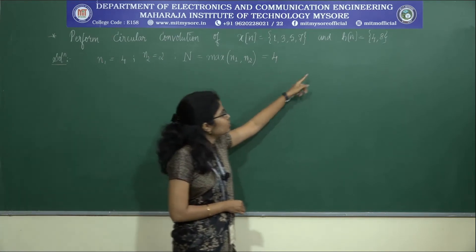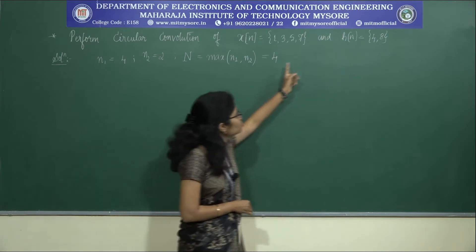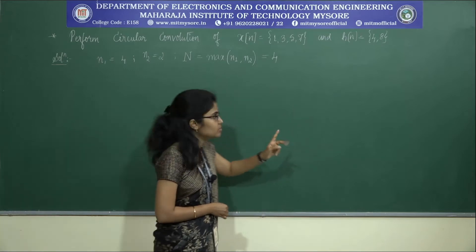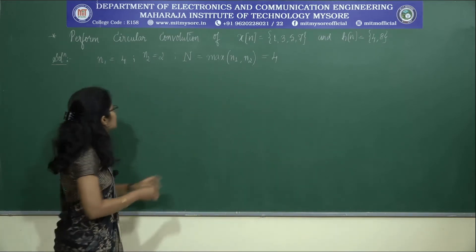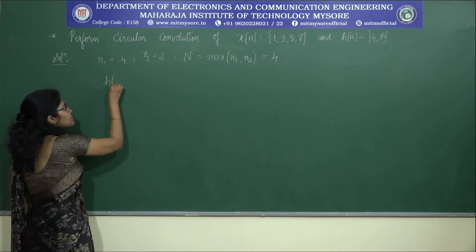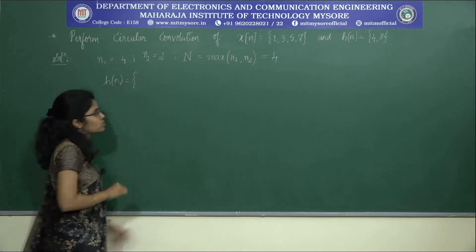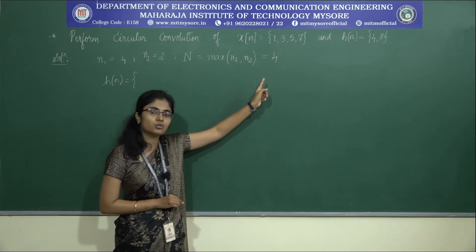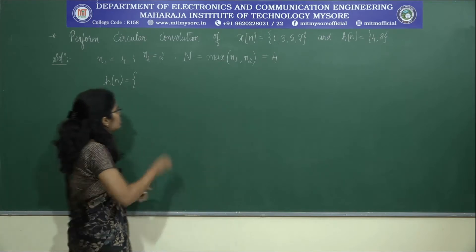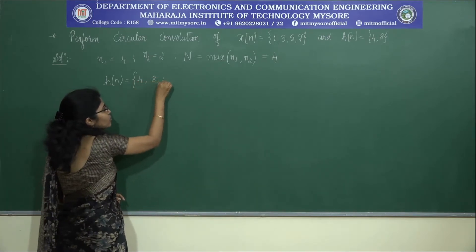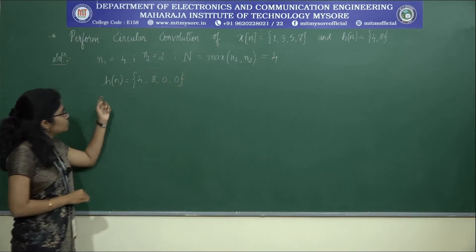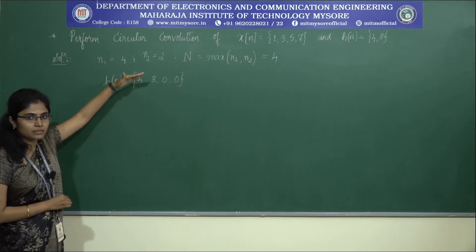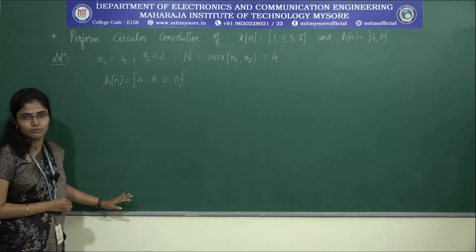We need to approximate the length of h(n) to 4. We have only 2 samples but the length should be 4, so we need to append zeros to make the length 4. Since we have 2 samples, we add 2 zeros at the end of h(n), making the length of h(n) equal to 4. This is how we make the lengths equal before finding circular convolution.